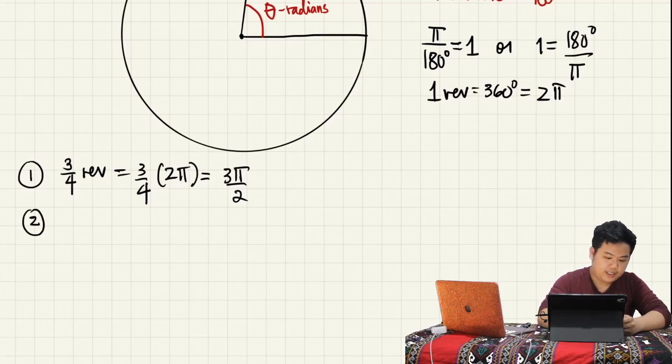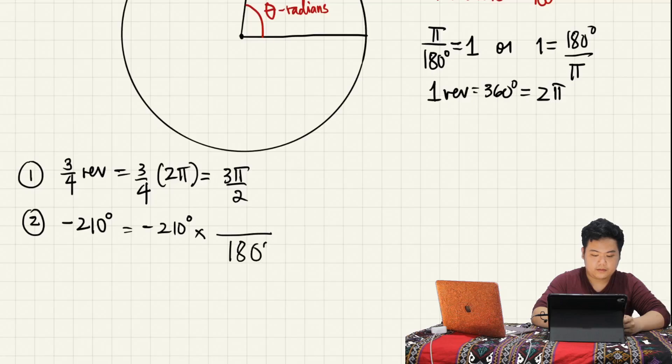Next example, let us convert to radians this negative 210 degrees. Ang gagawin natin we will multiply it by 1. Kailangan macancel yung unit na degree, so i-multiply natin siya by pi over 180 degrees para mag-cancel yung degree natin. What do we get? Cancel yung 0, 0, 21 over 18, that is, ang common factor 3, so 7 over 6. Negative 7 pi over 6 siya in radians.